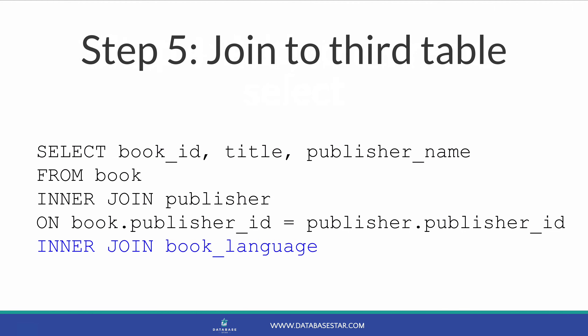Now we can join to the third table. To do this, we add another JOIN clause after we've joined to the second table. So on a new line, after your existing JOIN clause, repeat steps 2 and 3. Enter the join type, such as INNER JOIN — it can be a different join type to the other joins. Then enter the table you want to join to. In this example, we are going to join to the book language table, to get the language of the book.